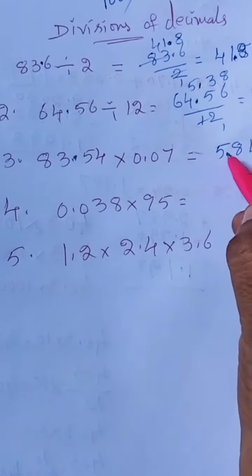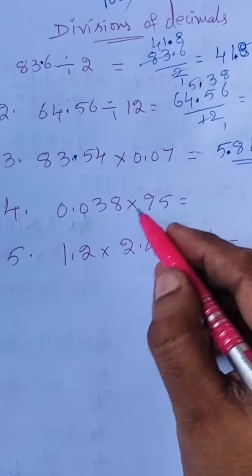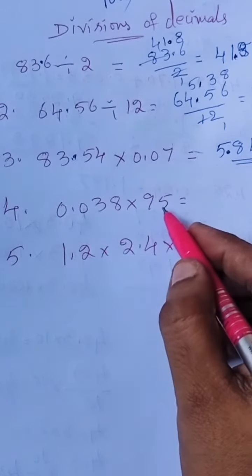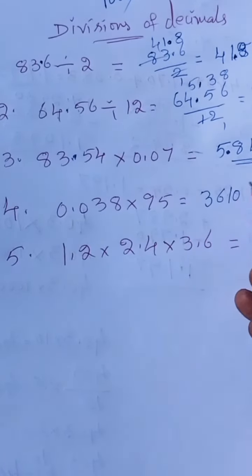Next one: 0.038 into 95. So answer equals 610. So here 1, 2, 3, so 3 digits before the point we keep the point. So 3.610.